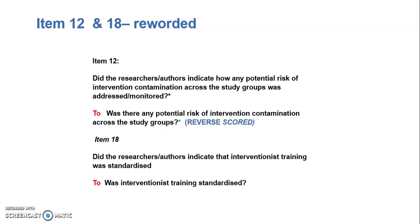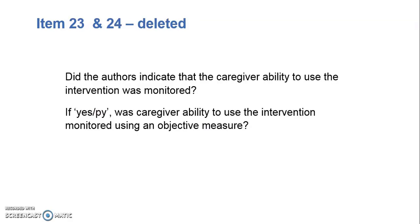Items 12 and 18 were reworded. For item 12, the question was changed from 'did the researchers or authors indicate how any potential risk of intervention contamination across the study groups was addressed or monitored?' to 'was there any potential risk of intervention contamination across the study groups?' This item was reverse scored, so the ideal answer would be no — there was no risk of intervention contamination — and this was reverse scored to a yes in order to be included as a high quality rating. Items 23 and 24 were deleted, as the pilot group felt that the two items were not essential since the response was captured in item 21.